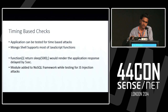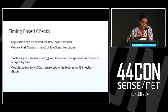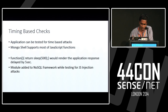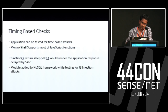How do you check for JavaScript injection attacks in MongoDB? You could check for JavaScript functions — since there are some predefined functions within the Mongo shell, you could use, for example, sleep(5000), which would sleep for five seconds. The application would render the response with a five-second delay. So you could check for JavaScript injection attacks. A module has been added to the NoSQL exploitation framework which I've written, and it tests for web applications.